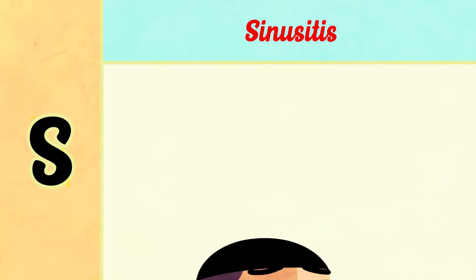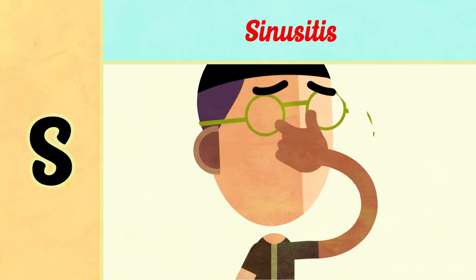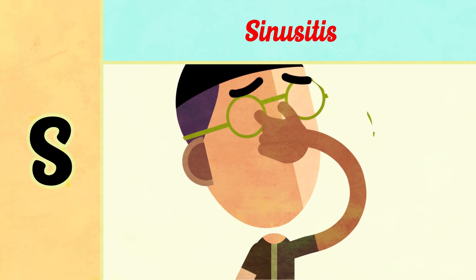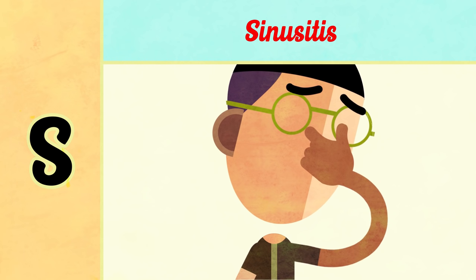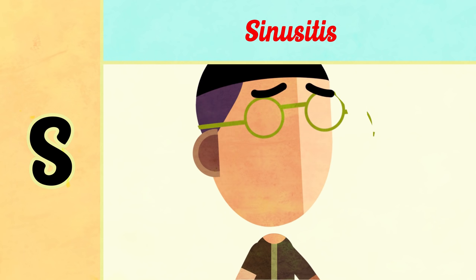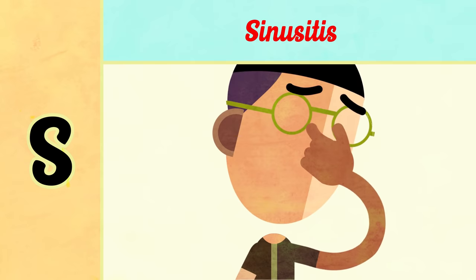S is for sinusitis. Since all sinuses have only one opening, and that opening is in the lateral wall of the nose, DNS causes obstruction of these openings due to nasal obstruction.